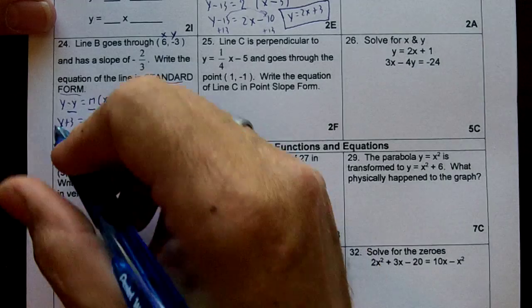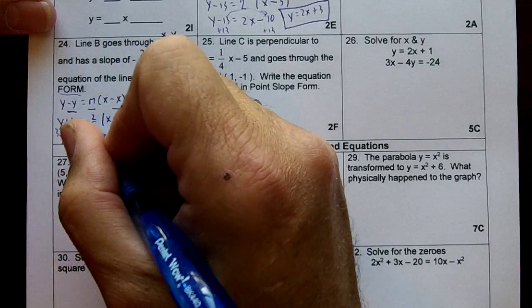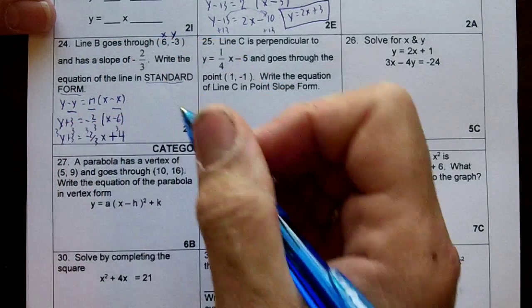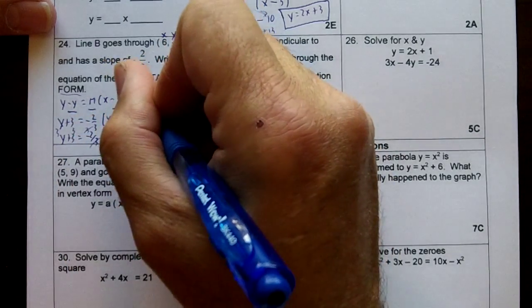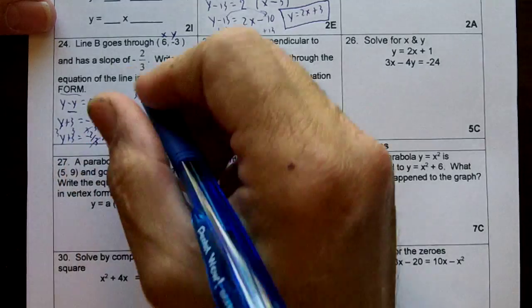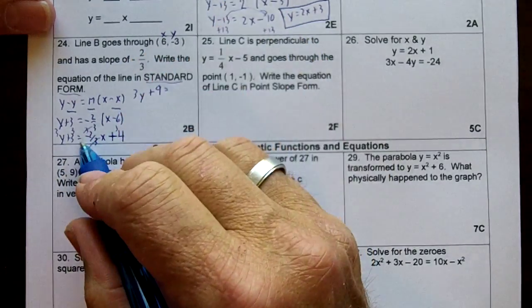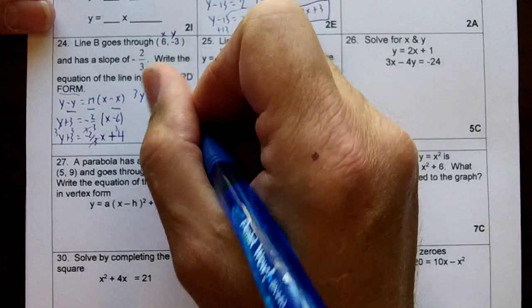Now then, I've got to get rid of this fraction, so I'm going to put a 3 on top of every single term. The 3's here cancel out. 3 times y is 3y plus 3 times 3 is 9 equals -2x + 12.